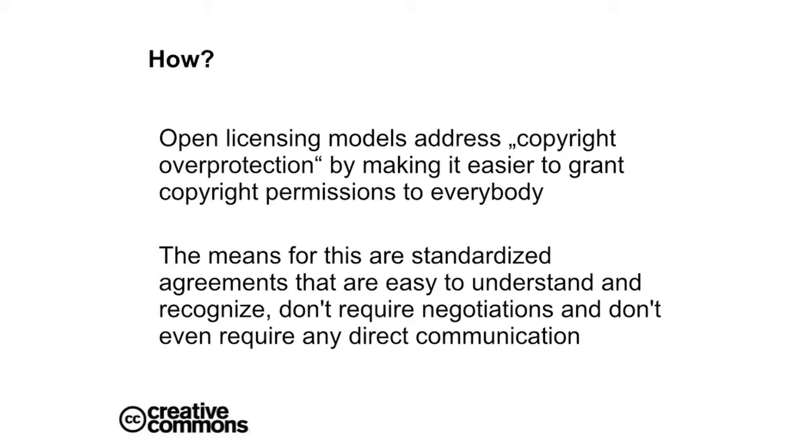How is this done? Open licensing models address this copyright over-protection by making it easier to grant permission to everybody. This is done through standardized agreements that are easy to understand and recognize, requiring no negotiations and no communication to come into force. But conditions apply. If someone wants to allow indiscriminate use, they can simply waive their rights — though that's not possible in all countries, for example in Germany. Some people want to only give permission under conditions, so instead of giving up all rights, you use a licensing contract to lower copyright protection gradually.